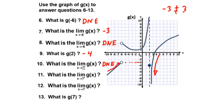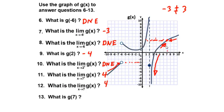Problem eleven: the limit as x approaches 7 from the right is 4, based on the graph. Problem twelve: the limit as x approaches 7 of g of x — the left side and right side both equal 4, since the curve is continuous at x equals 7. Problem thirteen: g of 7 equals 4, as the actual output value at that point is 4.